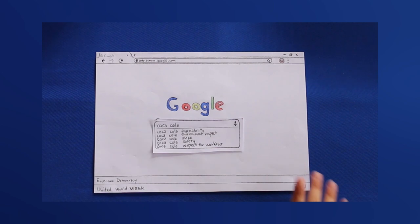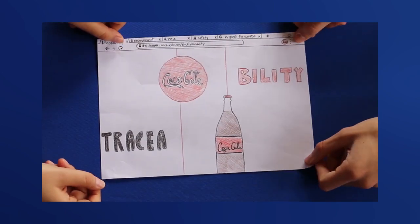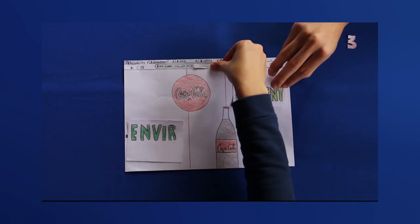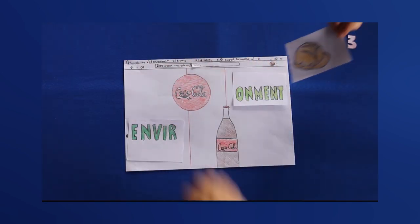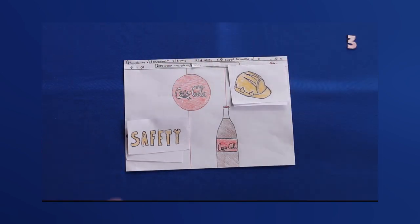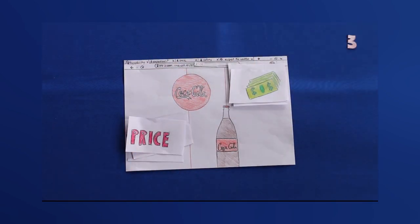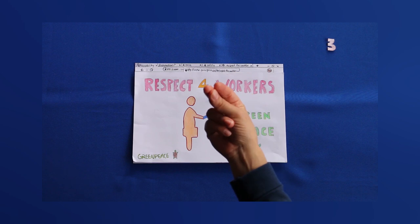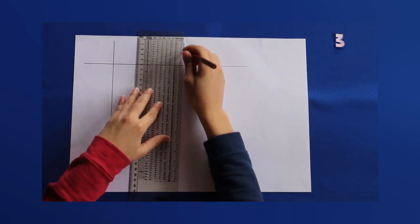Look for features such as traceability, environmental impact, and respect for the workers' safety and prices. With this research, you will be able to create the instructions for the event. Prepare a form and divide it into categories.